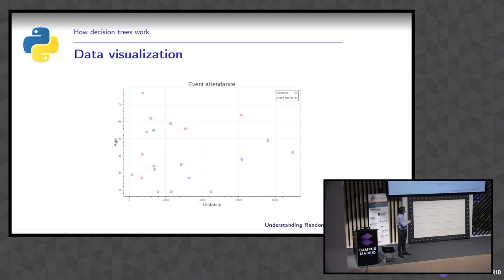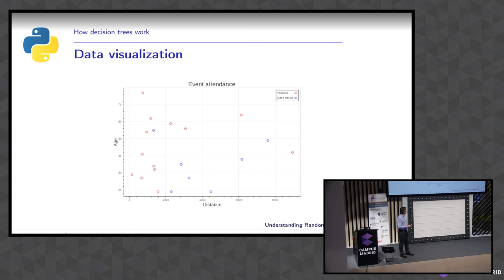If this is really our dataset, I don't think anyone should be using machine learning. A linear model that traces a line would be what we really want. But the example is still useful to see how decision trees work. A linear model would just separate the two classes at the best place, whereas a decision tree considers one variable at a time.